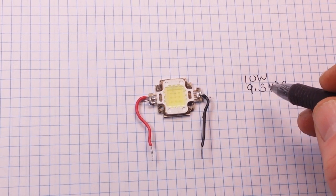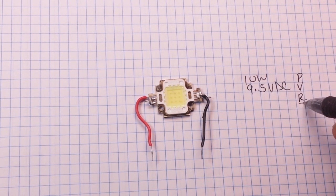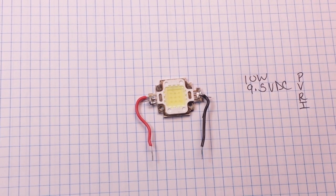So what we're missing here, here's P, here's V, we don't have R, and we don't have I to complete our circuit.